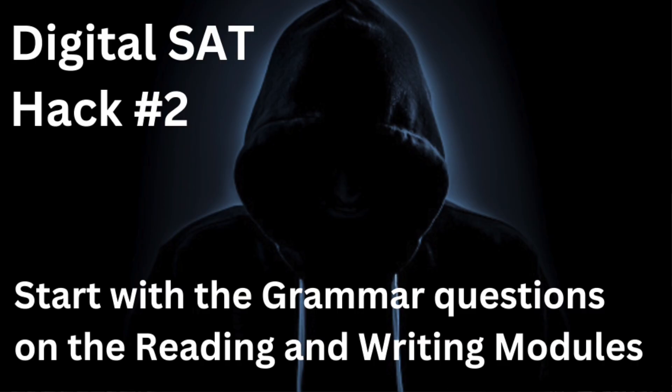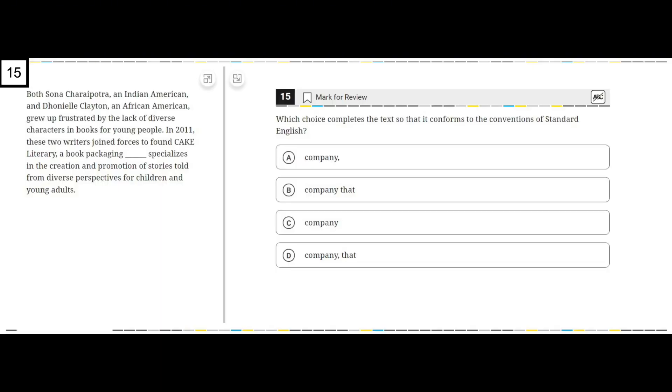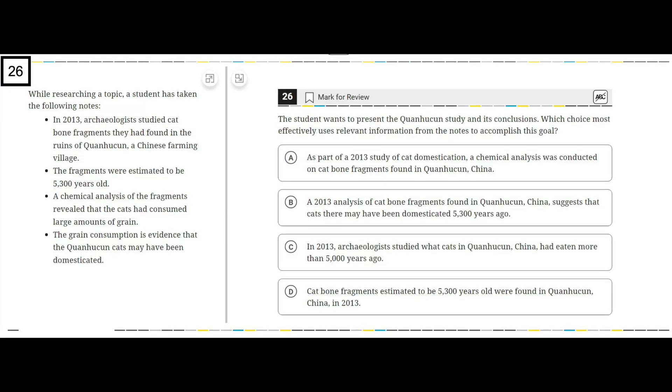Digital SAT Hack Number Two: Start with the grammar questions on the reading and writing modules. The second Digital SAT hack is to start with the grammar questions in the middle of the reading and writing module, around question 15 or 16. The easiest questions on the reading and writing section are the grammar and notes questions on the second half of the module. With some basic prep, you should be getting a perfect score or close to it on those questions. Take your time reading the questions carefully and going through the right processes.